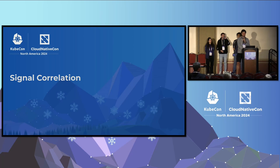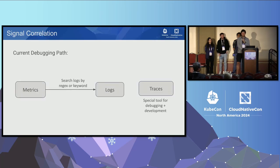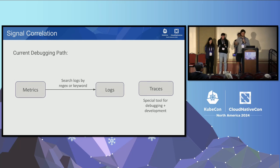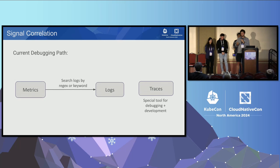Now that we've got traces, metrics, and logs, let's talk about signal correlation and why that's important. Currently, the way we would debug problems: we'd see a metric we weren't happy with — long latencies or a high number of failures — then go look at the kubelet logs and search the time period for something unusual. Maybe grep for a pod name, but sometimes logs use pod UID instead. So this was pretty error-prone and took a lot of time.